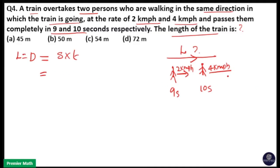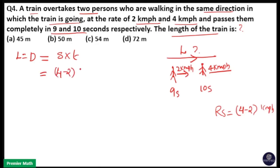Here speed is equal to the relative speed of the two people, because both the train and the two people are traveling in the same direction. So I will take the relative speed of these two people, that is 4 minus 2 km per hour. I will convert it to meters per second, that is multiplied by 5 by 18. The train overtakes the first person in 9 seconds and the second person in 10 seconds.